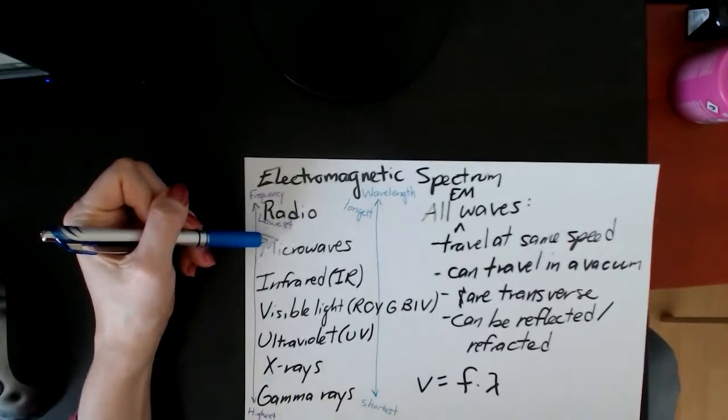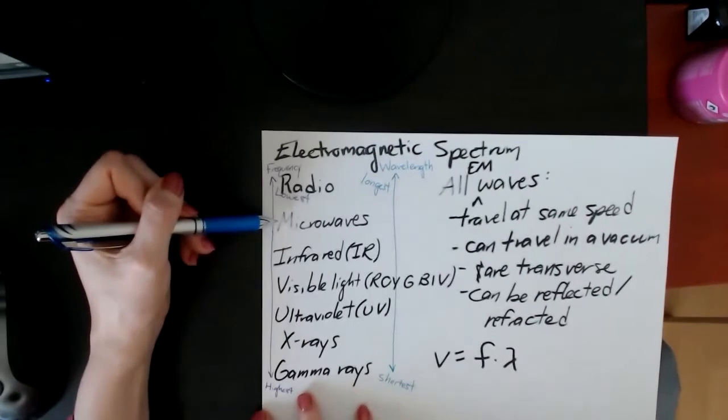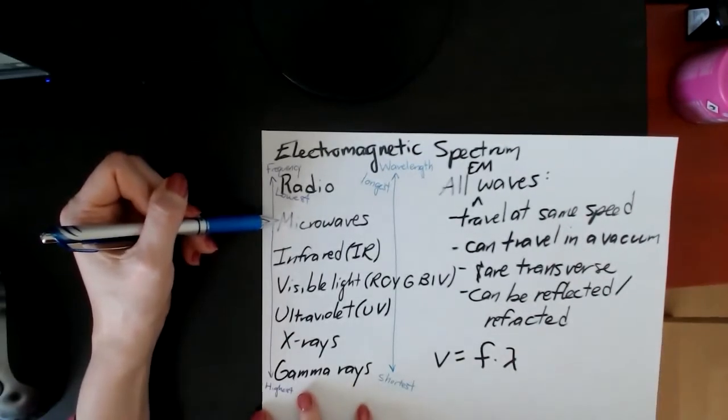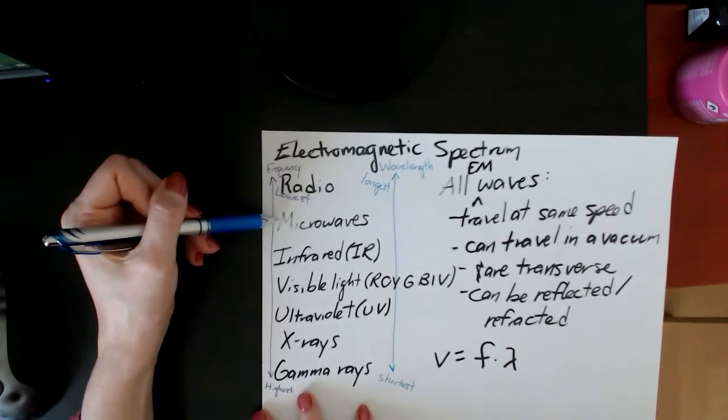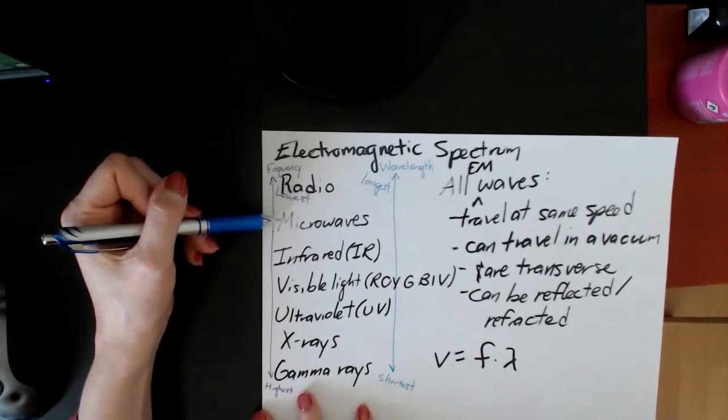Microwaves are used for cooking or satellite communication. Those are the two main uses for them, and the danger of them is that they can heat internal tissue. Ways that you could protect yourself against that would be things like close the microwave door, avoid exposure, things like that.